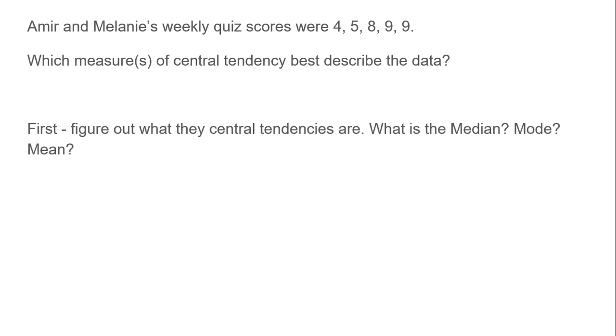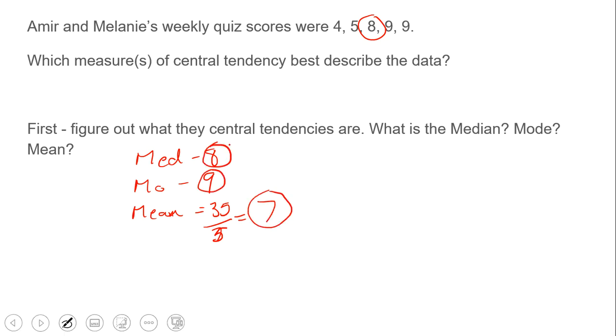Here's an example. Amir and Melody's weekly quiz scores were 4, 5, 8, 9, and 9. So what measures of central tendency best describe the data? The median is 8. The mode is 9, and the mean, if we add it all up, 35 divided by 5 equals 7.